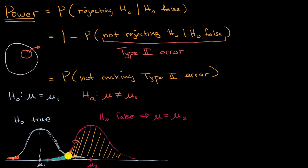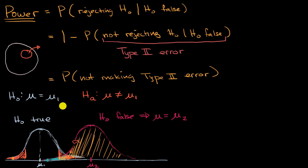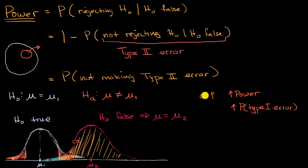How can we increase the power? One way is to increase alpha, our significance level. If we increase the significance level — which is an area — we expand the rejection region, pushing its boundary further, and the power area becomes larger. But if you increase alpha, that will increase the power and also increase your probability of a type one error, because the significance level is the probability of a type one error.